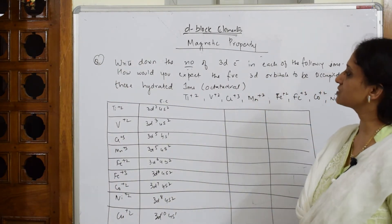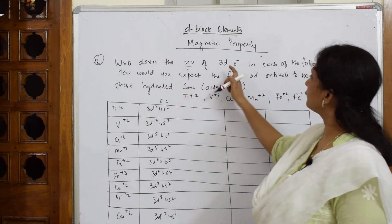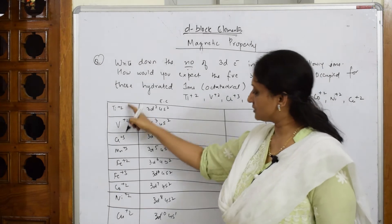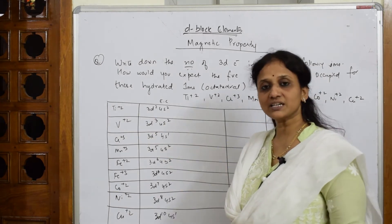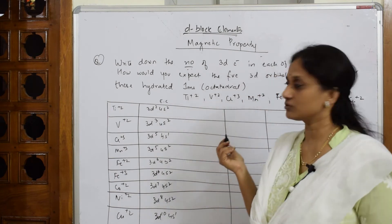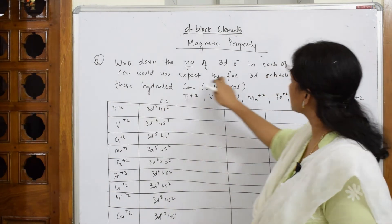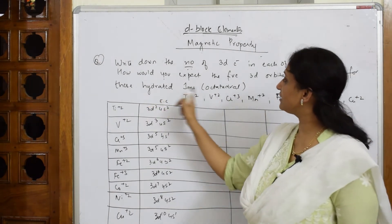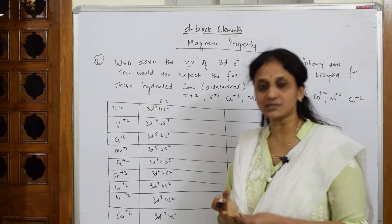So what should I do in this question? They've asked me to write down the number of d electrons in each of the following ions. They've given us a list of ions and I have to write after removing those electrons what is the leftover d electrons and how would you expect the five 3d orbitals to be occupied for these hydrated ions octahedral. This is important.